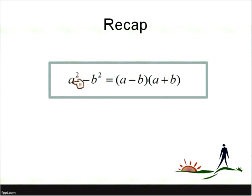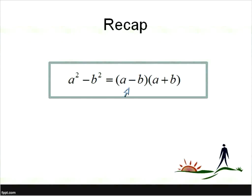Quick recap: whenever you have a perfect square minus a perfect square, take the square root of the first term minus the square root of the second term, times the square root of the first term plus the square root of the second term. You'll notice I put the addition first and the subtraction second — multiplication is commutative, so you can do it either way. It's absolutely fine.